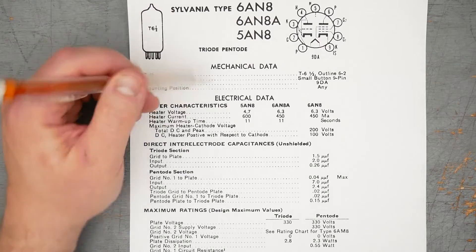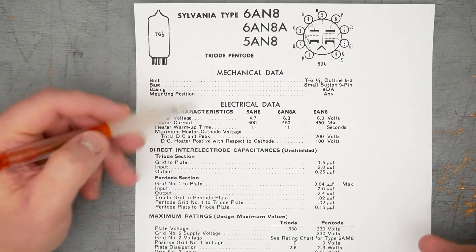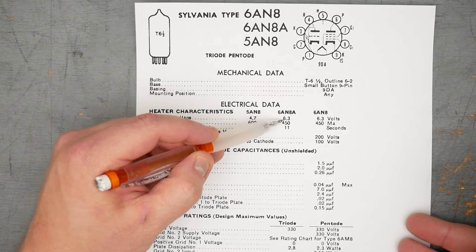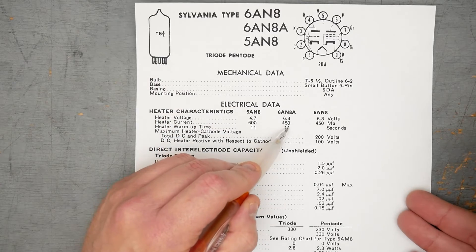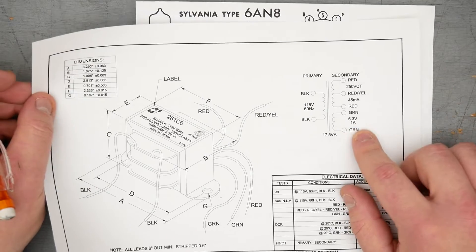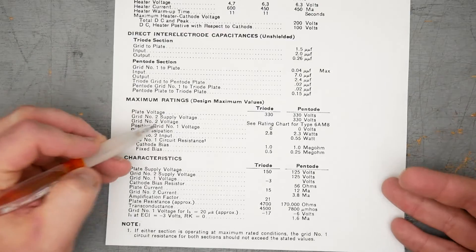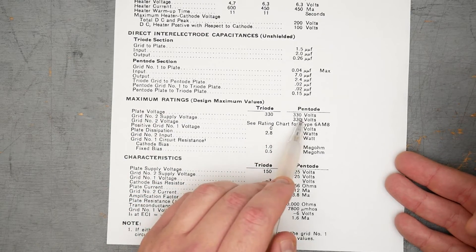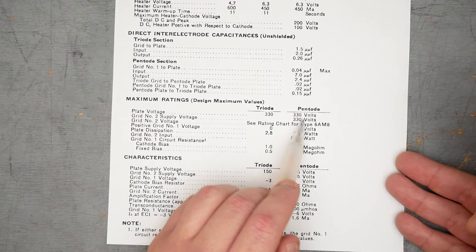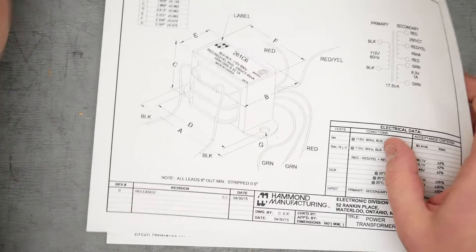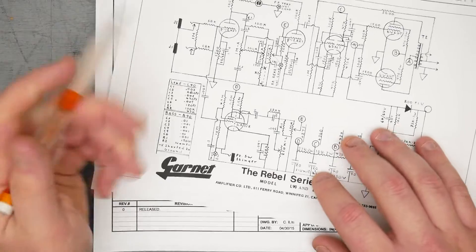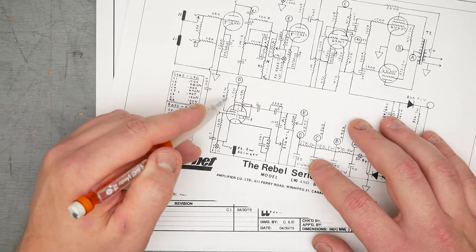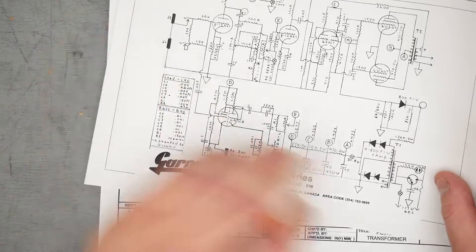This is the Sylvania data sheet. We can see here our heater voltage for 6AN8 is 6.3 volts, so that's right on. Heater current is 450 milliamps, so that's no problem, we have 1 amp of current available. Our maximum ratings down here: the triode is 330 volts on the plate, 330 volts on the pentode, 330 volts on the screen of the pentode. With the large plate resistors and screen grid resistors here, I don't think we're going to be seeing close to those voltages, so that should be fine.